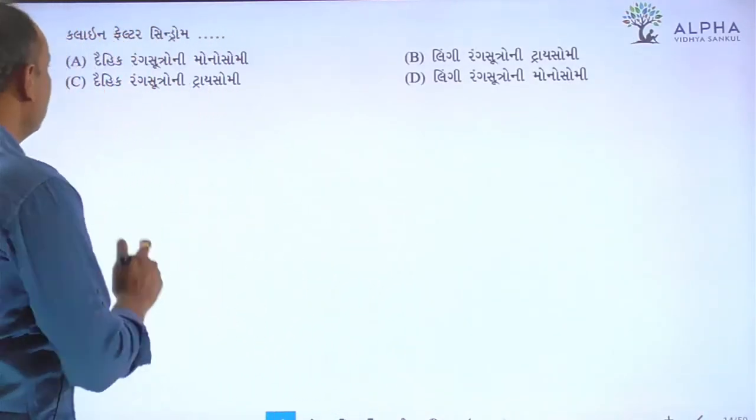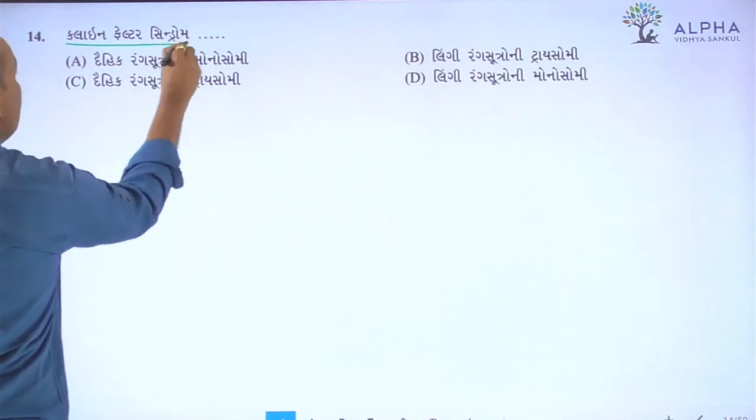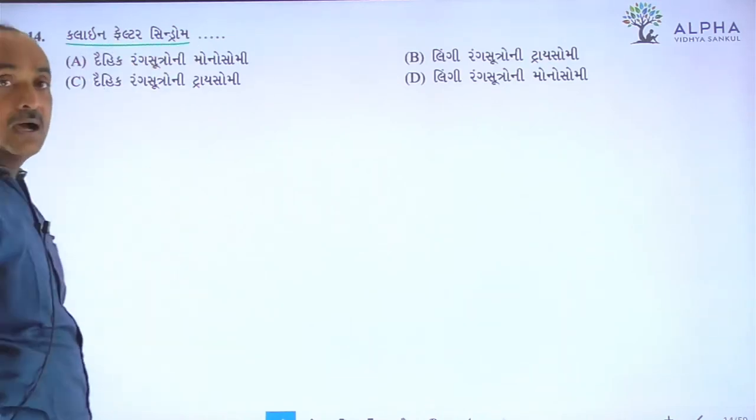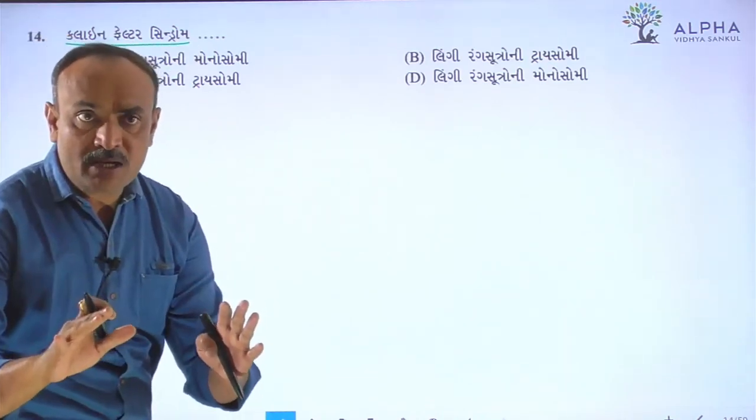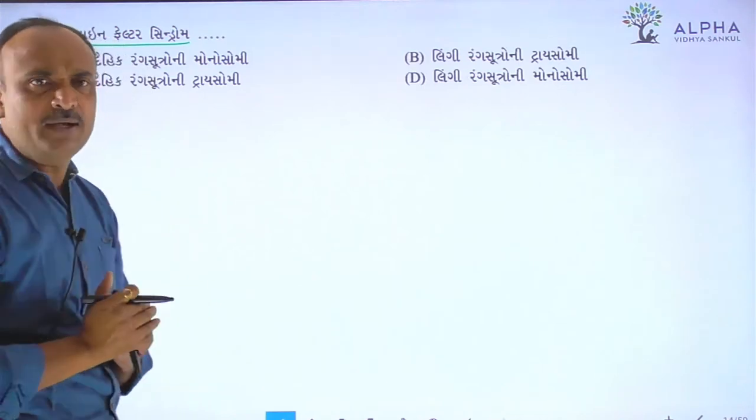Question number 15, Klinefelter syndrome. This is a chromosomal abnormality called aneuploidy. What is aneuploidy?